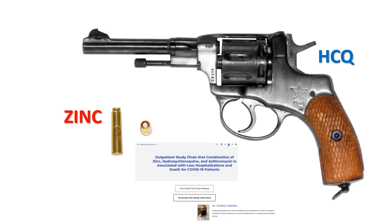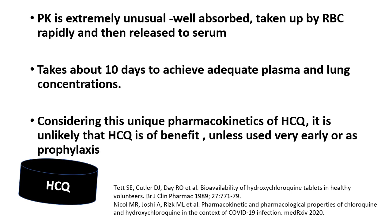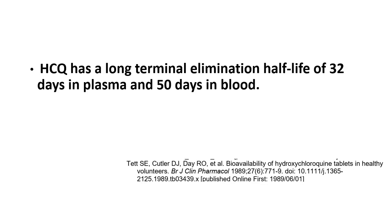According to Zelenko, if HCQ is the gun, zinc is the bullet — he always proposed giving zinc along with HCQ together. One interesting thing is the pharmacokinetics of HCQ: it has extremely unusual pharmacokinetics. It is well absorbed, rapidly taken up by red blood cells, and released to the serum. Importantly, it takes about 10 days to achieve adequate plasma and lung concentration. HCQ also has a long terminal elimination half-life of around 32 days in plasma and around 50 days in blood.